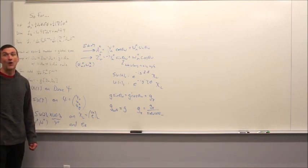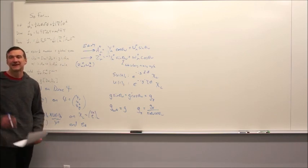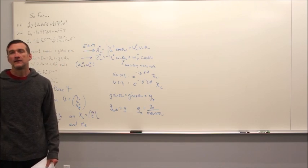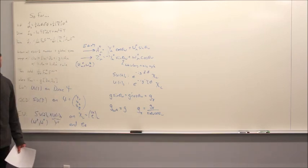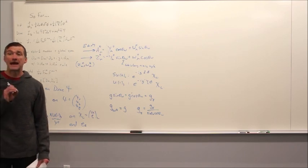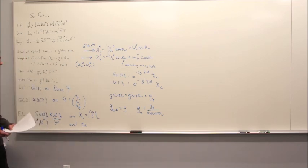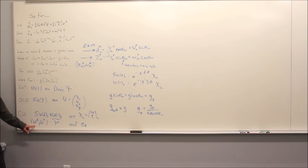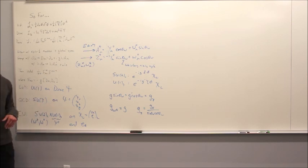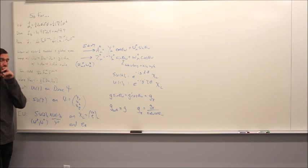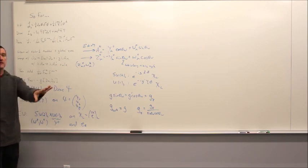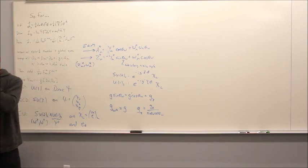Why does the W± remain unchanged after symmetry breaking? Well, they don't remain completely unchanged — they will acquire a mass. But it's literally the W± with a mass; they don't get recombined with things from the neutral sector like the neutral part does. There's nothing special about θ_W — it's just some angle. You'll understand more of where θ_W comes in on Thursday.